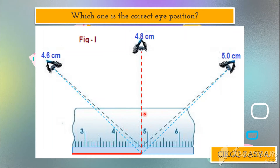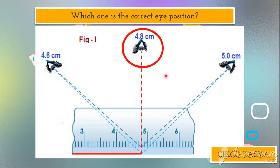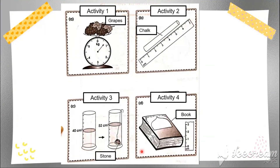For a ruler, your eyes have to be at 90 degrees and straight — not above or below. The correct eye position is the middle one, straight on. Only then will you get the correct reading. For this activity you can use any papers provided.